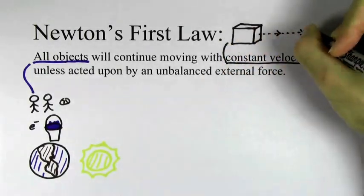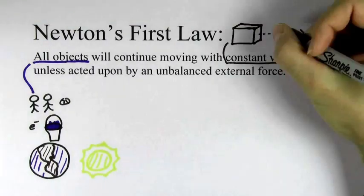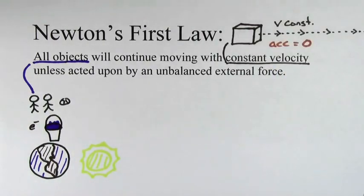By constant velocity, we mean moving in a straight line at a constant speed. In other words, the acceleration is zero. By unbalanced force, we mean a force that's not canceled out by another force.